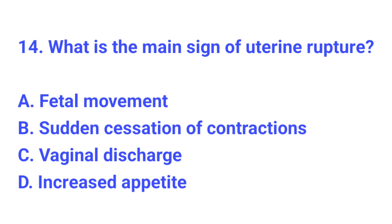Question number 14. What is the main sign of uterine rupture? The correct answer is B, sudden cessation of contractions.